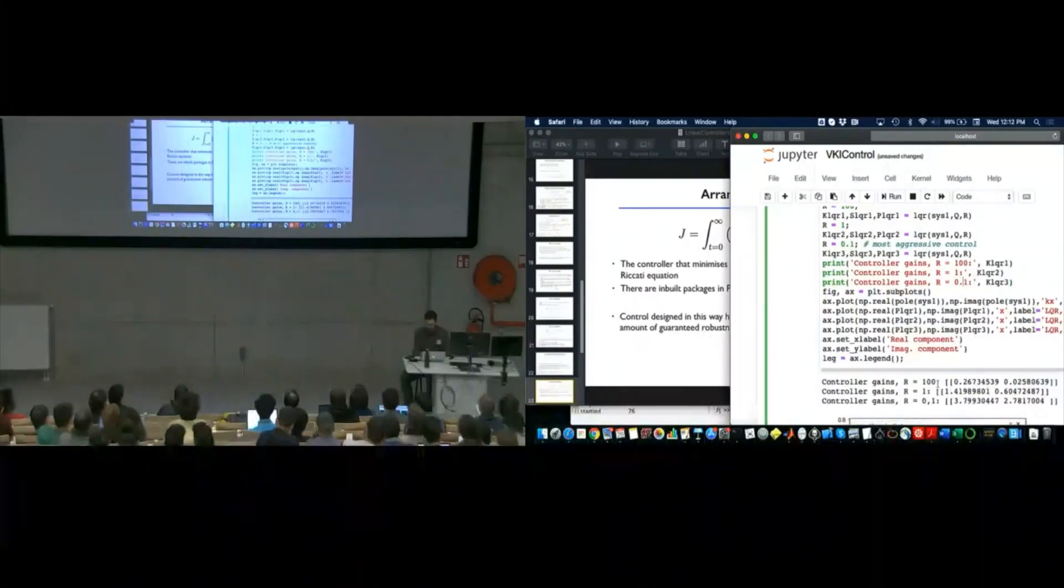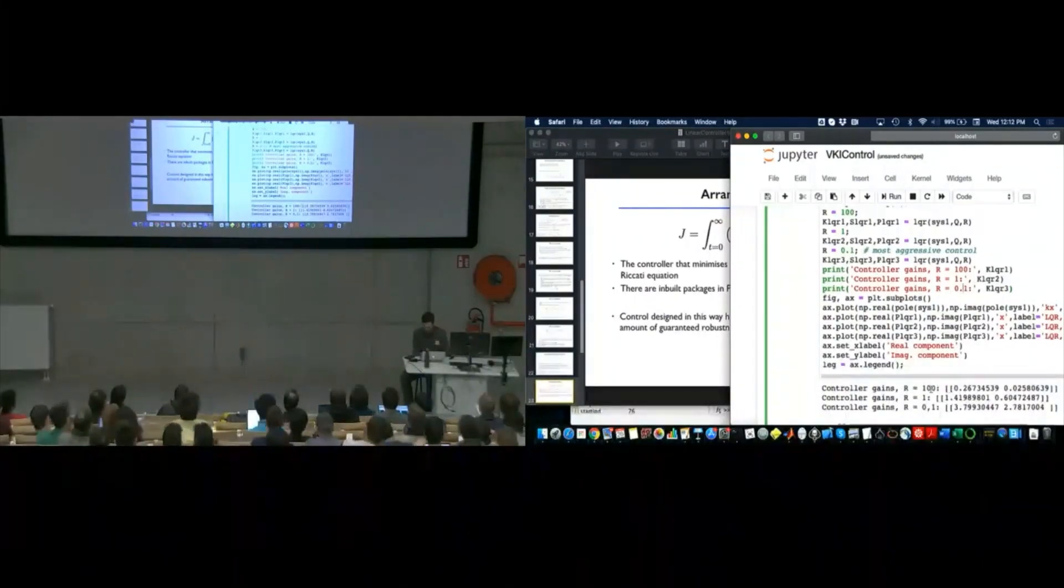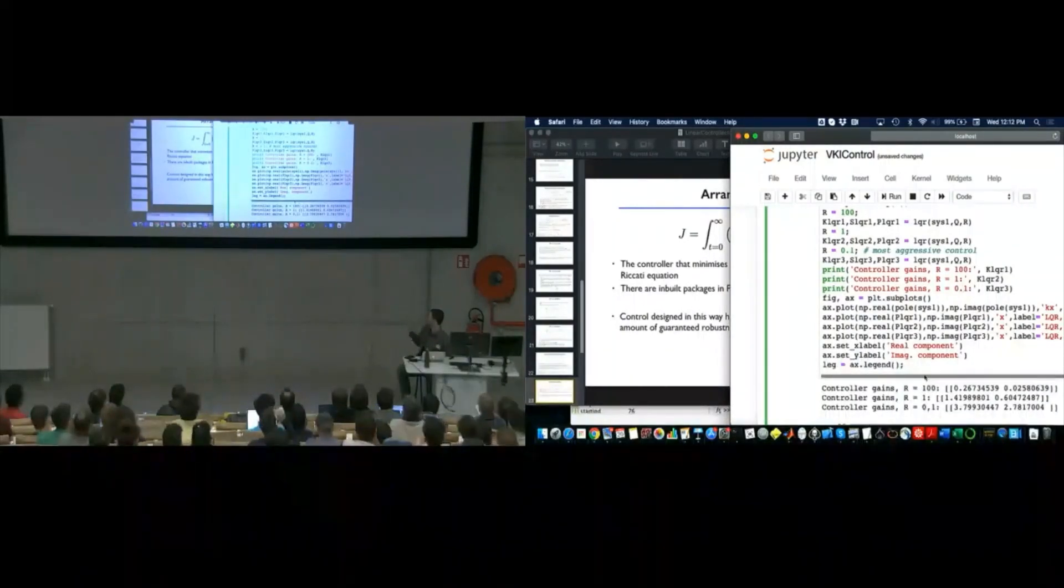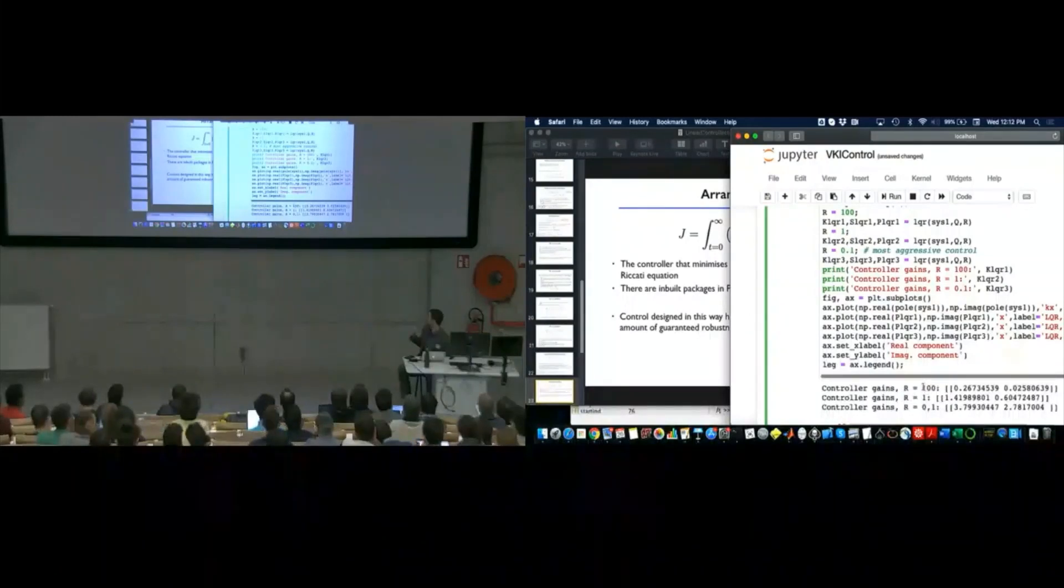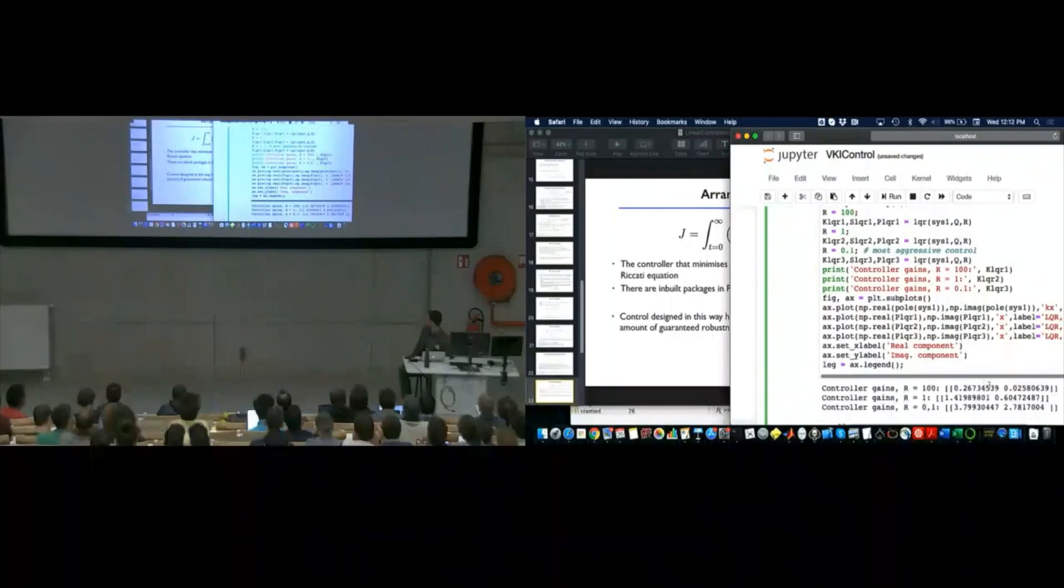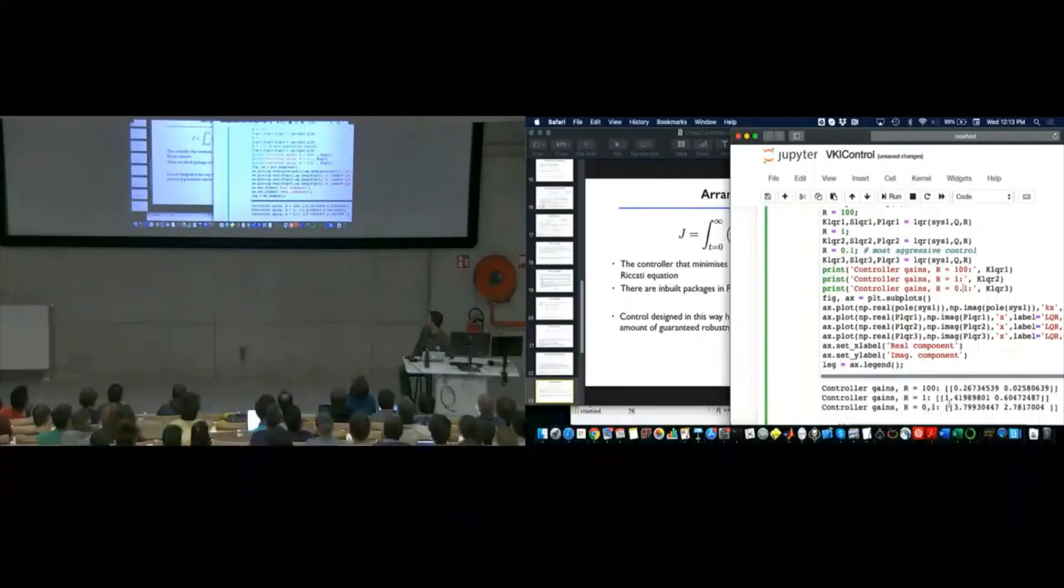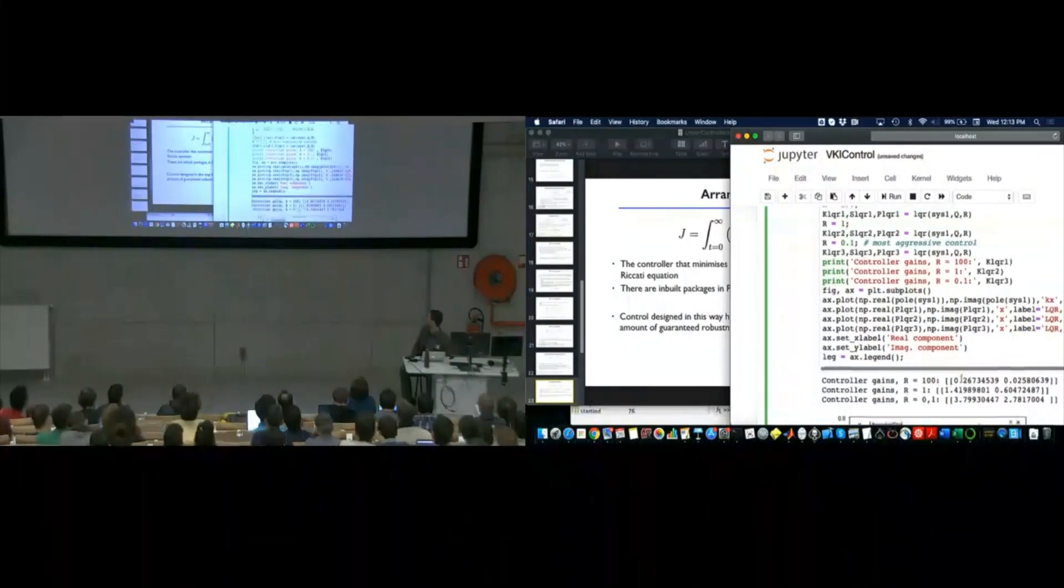And these actually make sense if you think about it. So, when R is really big, I'm penalizing the effort that my controller has to exert a lot more. And so, I end up with relatively low controller gains. Conversely, when my R is small, I allow my controller to have a lot more freedom to use up a lot of energy. And so, I get comparatively larger gains.